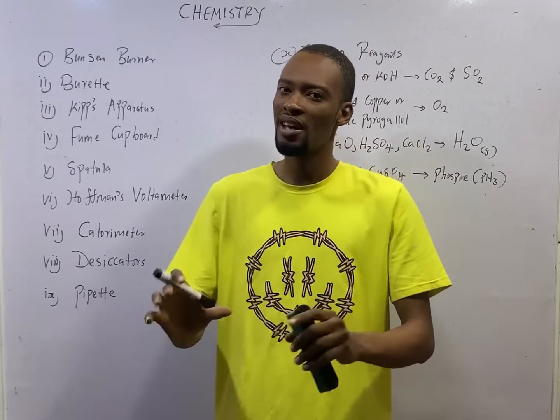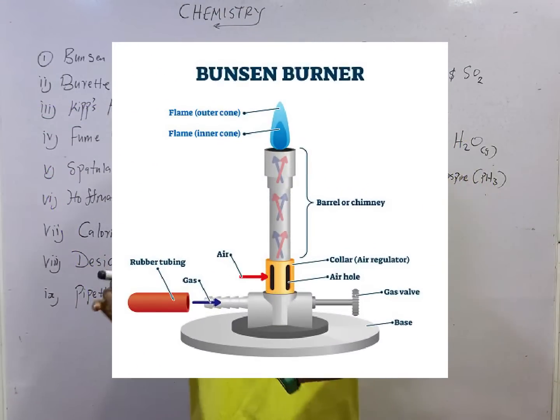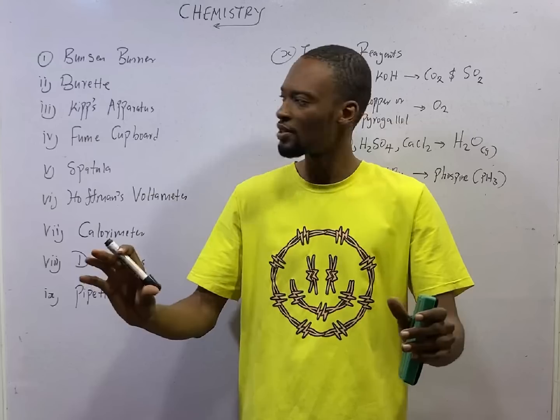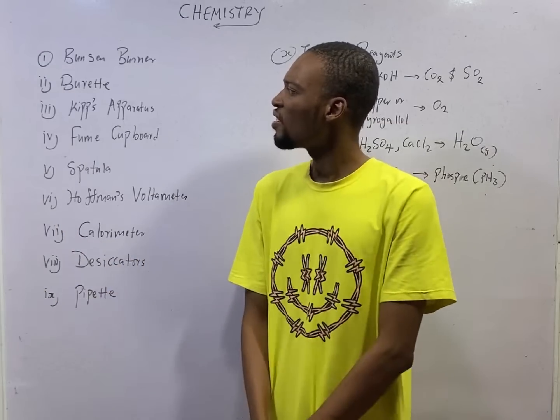The first apparatus is the Bunsen burner. The Bunsen burner is used for heating and for exposing items to flames. Then we have the burette.